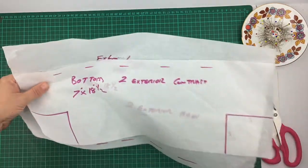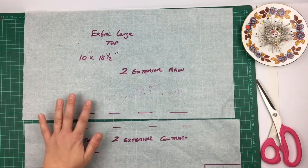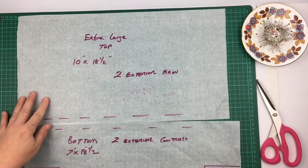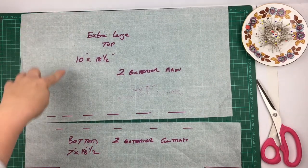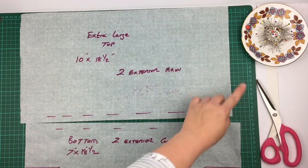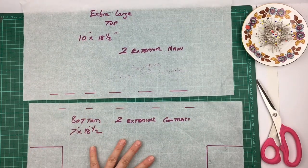For the outside of the bag where you've got that lovely contrast bottom, you're going to cut two pieces of the exterior main fabric. Your main design would be 10 inches tall but still the same width across, which is 18 and a half. The bottom part would be the same across but would be seven inches tall.